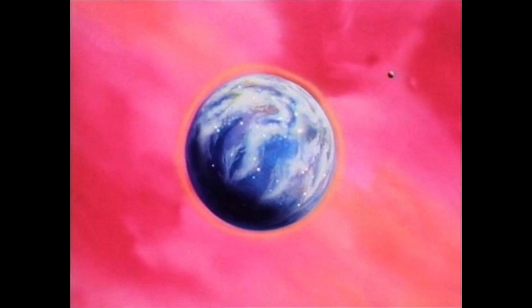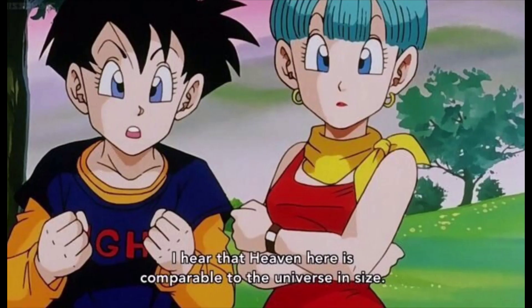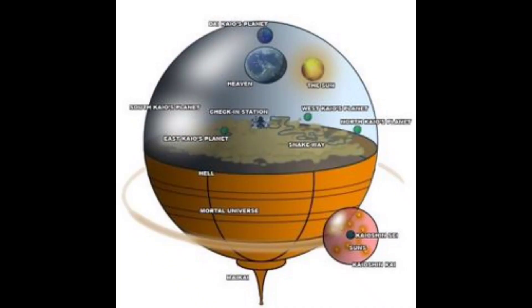Now what does the afterlife actually contain? First let's look at heaven. It's been established that heaven is the size of the universe, which further supports that the afterlife is a higher dimension, since it can contain something as big as the universe but make it look finite and small. Yes — heaven is the size of the universe.